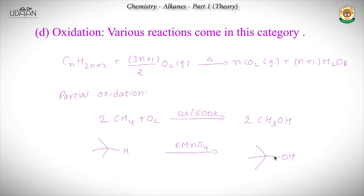Is it possible to get an aldehyde or carboxylic acid from partial oxidation? We can get it, but we need to supply very high temperature so that bonds between carbon atoms break up, because we need to put in a double bond for oxygen. We'll look at that in a little while.